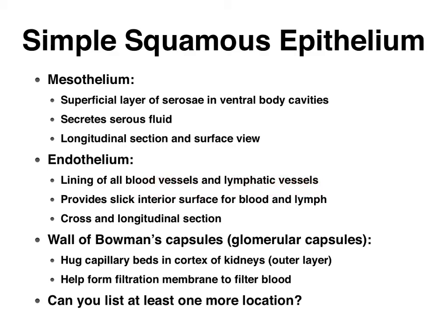There it forms a very slick surface for the blood and the lymph to flow against. And finally, we'll take a look at the outer layer of the kidney, which we call the cortex. In there, you'll see all kinds of little circular structures that we will call Bowman's capsules. The Bowman's capsules, together with the little capillary beds, form these filtration membranes in the kidneys that help filter our blood.